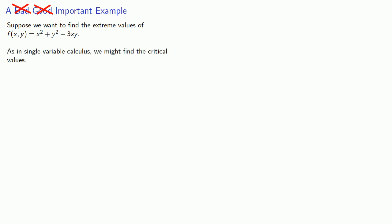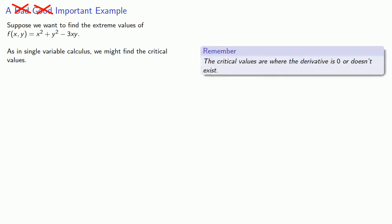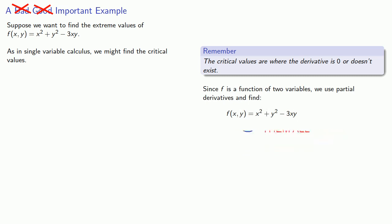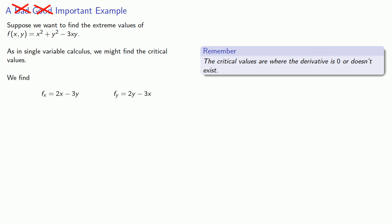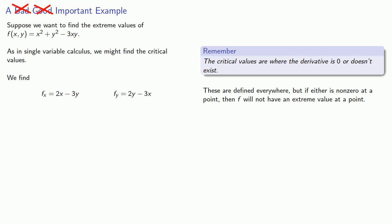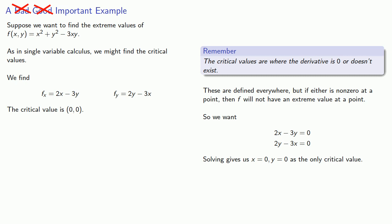As in single variable calculus, we find the critical values — these are where the derivative is zero or doesn't exist. Since f is a function of two variables, we use our partial derivatives. Our derivatives are defined everywhere, but if either is non-zero at a point, the function will not have an extreme value at that point. So we want our derivatives to be zero. Solving, x equals zero, y equals zero is the only critical value.